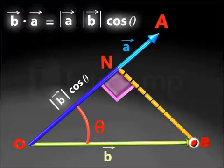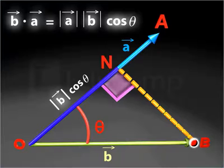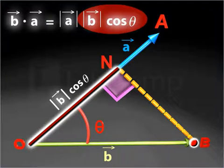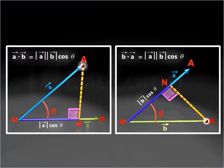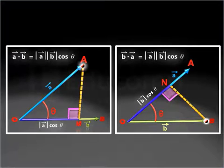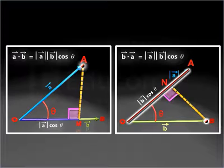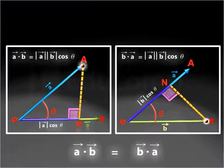Similarly, the dot product of vector B and vector A can also be obtained by multiplying the magnitude of vector A and the scalar component of vector B along vector A. The dot product of vectors A and B can be obtained either by multiplying the projection of vector A on vector B by the magnitude of vector B, or by multiplying the projection of vector B on vector A by the magnitude of vector A. This fact helps us to conclude that the dot product is commutative.